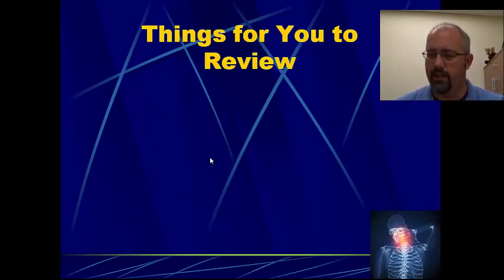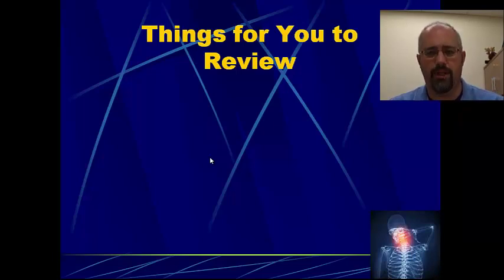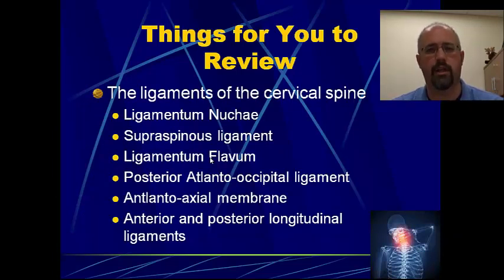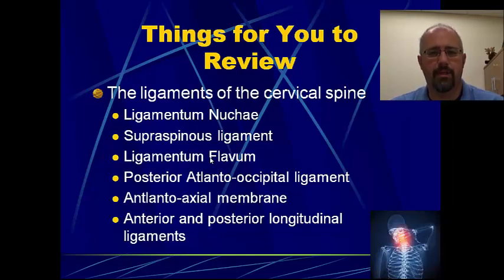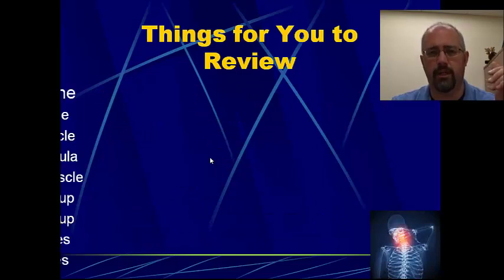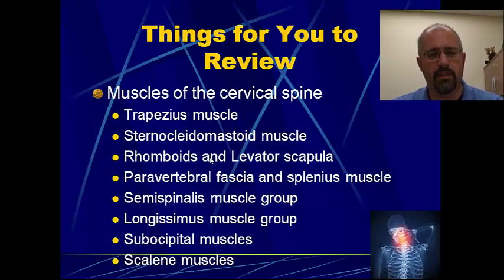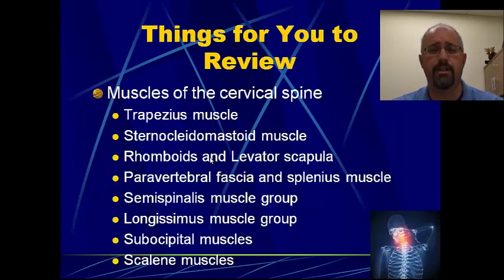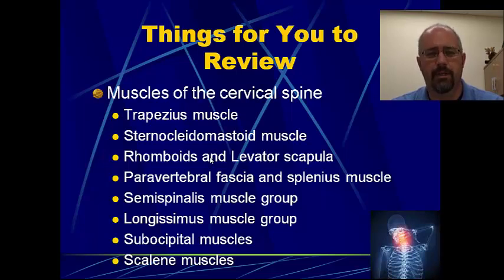A couple of things for you guys to look at and review — just make sure that you know where everything is, there's not a test on it. I want you to just refresh your memories on the location of the following ligaments: the ligamentum nuchae, supraspinous ligament, ligamentum flavum, posterior atlanto-occipital ligament, atlanto-occipital axial membrane, and then the anterior and posterior longitudinal ligaments. Just so we know what the restraints are to movement in the neck as we start to do our flexion, extension, rotation, and side bending tests. Then the muscles we need to be aware of: trapezius, sternocleidomastoid, rhomboids, levators, paravertebral fascia, splenius muscles, semispinalis, longissimus, suboccipital muscles, and scalenes.